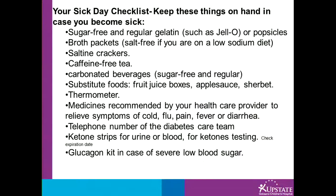Also keep the telephone number of your diabetes care team. You will need ketone strips for urine or blood ketone testing — remember to check the expiration date on your ketone strips. Urine ketone strips are only good for 6 months once opened, while blood ketone strips are generally good until the expiration date. You will also need a glucagon kit in case of severe low blood sugars.